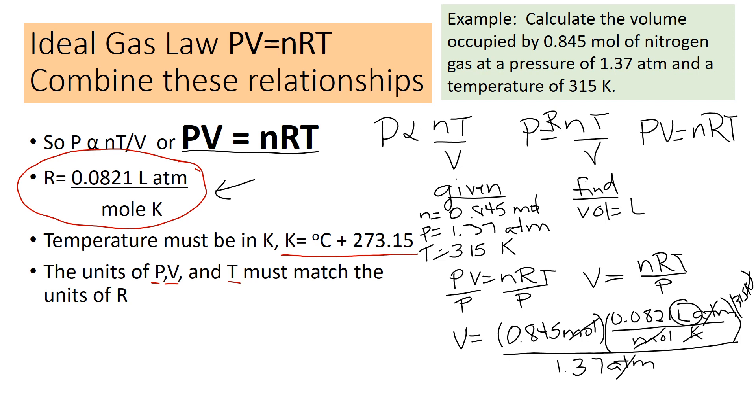So now I'm going to go to my calculator. 0.845 times 0.0821 times 315 divided by 1.37 equals, and I get that the volume equals 15.95. The unit is liters. And then to keep my significant figures, the 5 is going to round the 9 up, so that looks like it's going to be 16.0 liters with the correct significant figures.